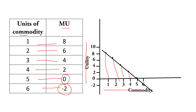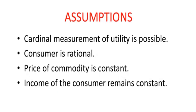Here are the assumptions of the Law of Diminishing Marginal Utility. The first assumption is that cardinal measurement of utility is possible — we can measure utility. The second assumption is that the consumer is rational.